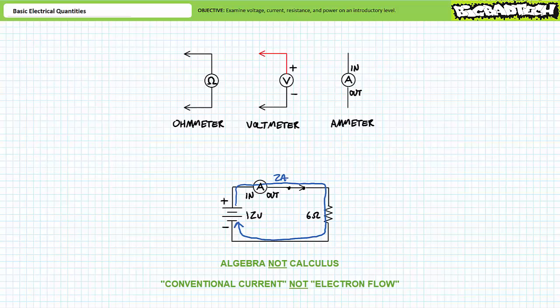Regardless, every meter made from 1752 forward reads current as it flows from positive to negative. Electrons, the moving negatively charged particles that flow through an electrical circuit, actually move from the negative terminal to the positive terminal.